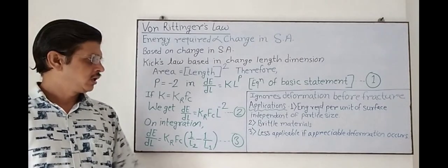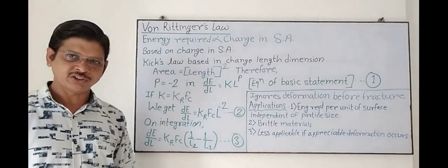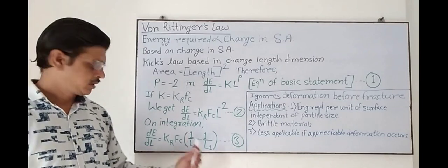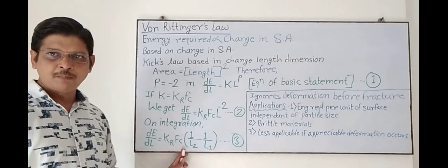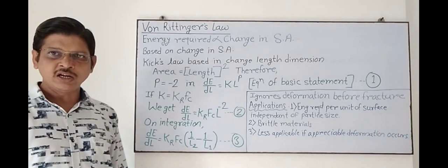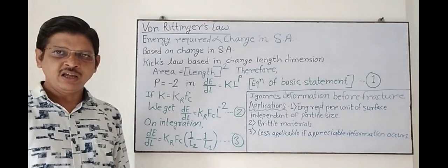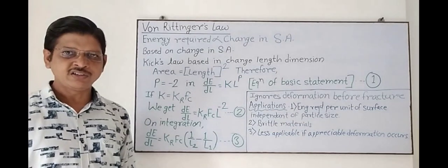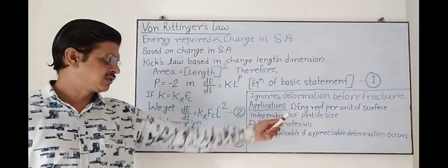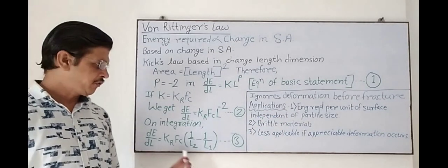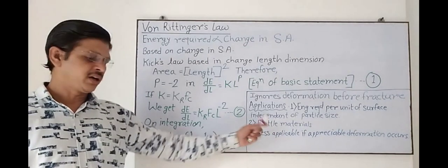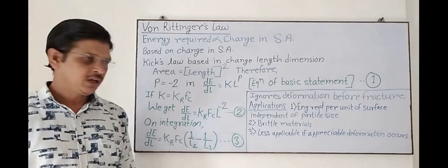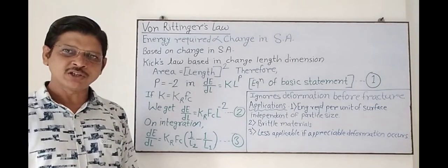Rittinger's law ignores deformation before fracture. This equation applies precisely only under conditions where the energy required for size reduction per unit of surface area is independent of the particle size. It is applied mostly for brittle materials, and is less applicable if appreciable deformation occurs.